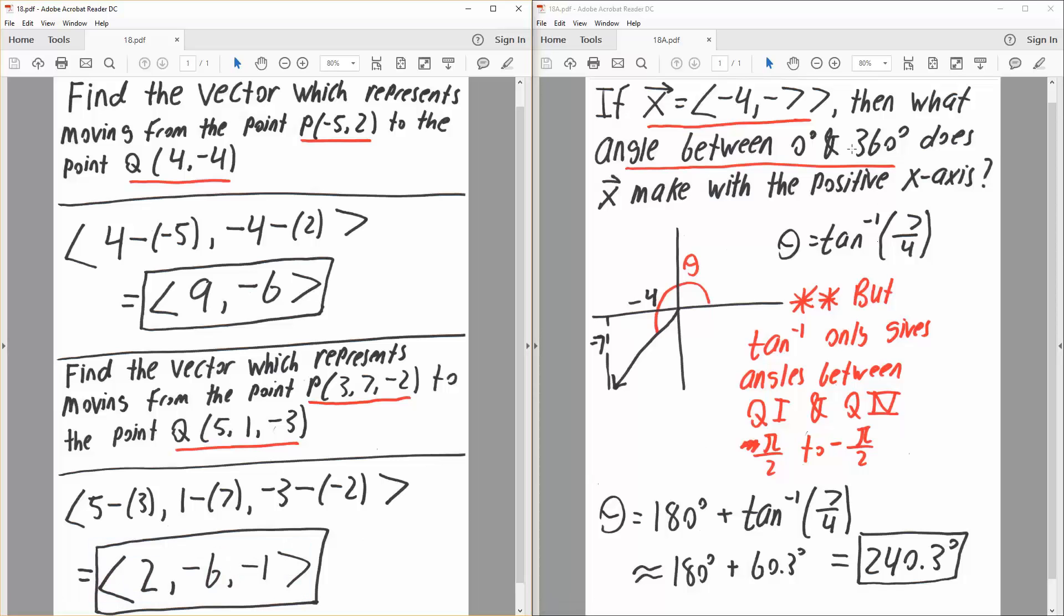The last one is if the vector x equals <-4, -7>, then what angle between 0 and 360 degrees does vector x make with the positive x-axis? We know we're at -4, -7, so we're in quadrant 3, so -4 and then down -7.